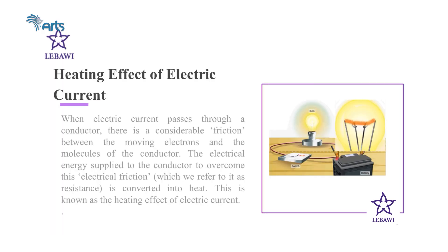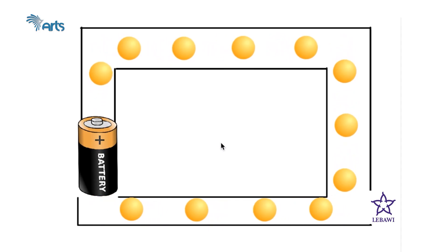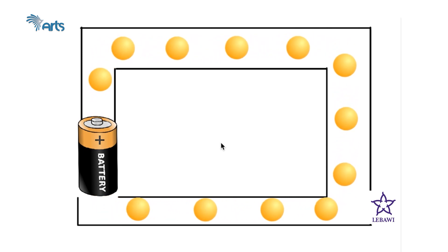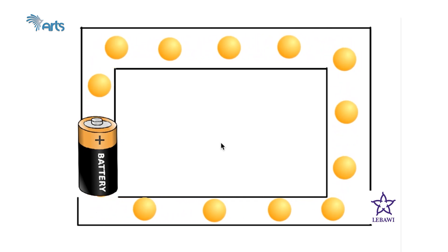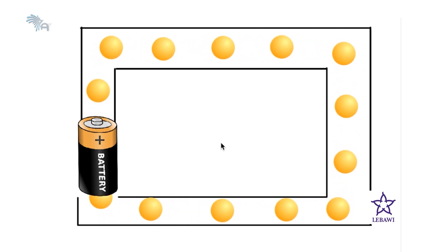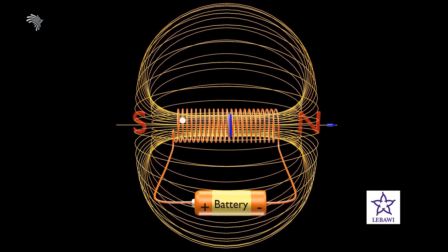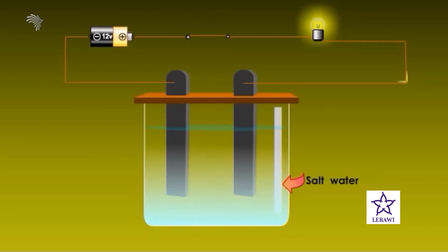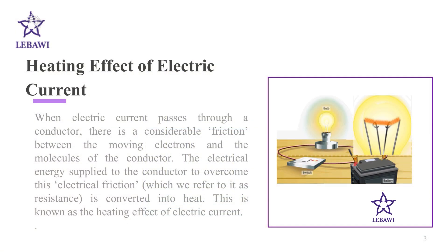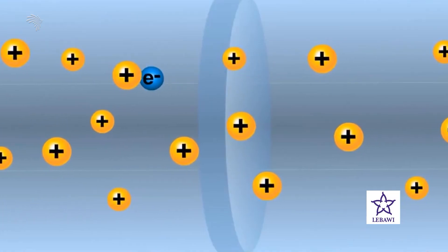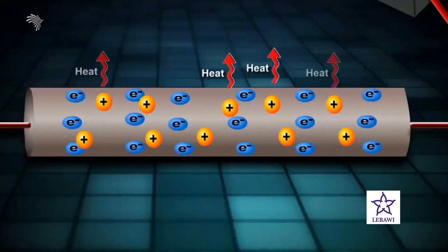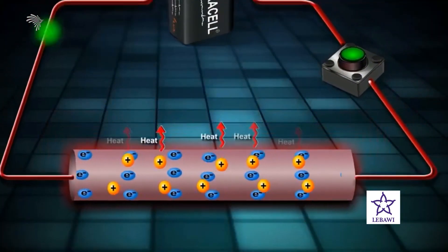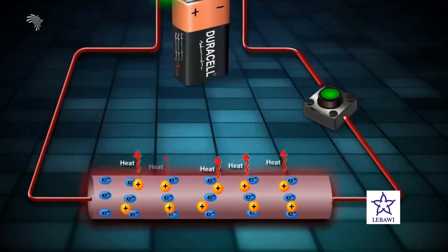The heating effect of electric current. Electric current is defined as the flow of electric charges in a conductor due to the potential difference between its ends. There are three different effects of electric current: the magnetic effect, the heating effect, and the chemical effect. When electric current passes through a conductor, there is considerable friction between the moving electrons and the molecules of the conductor. The electrical energy supplied to overcome this friction is converted into heat, and this is known as the heating effect of electric current.